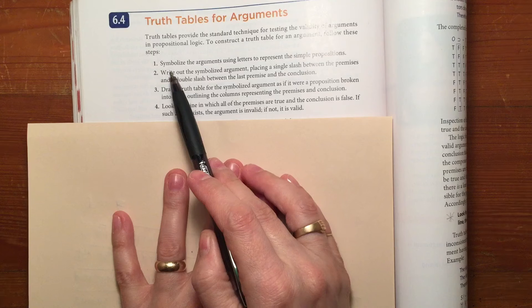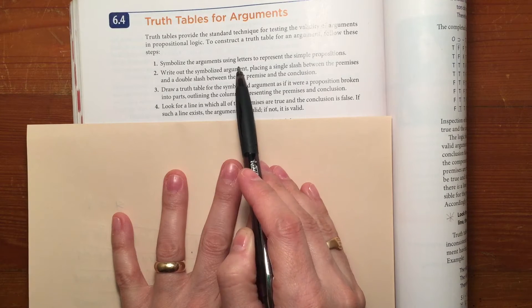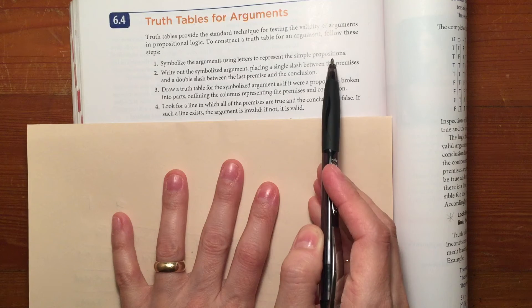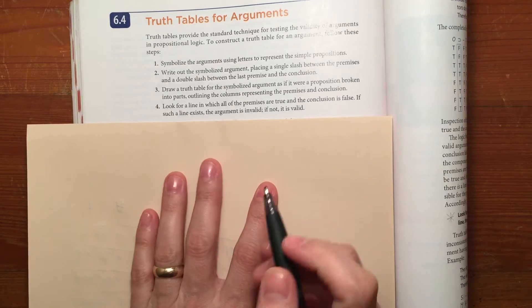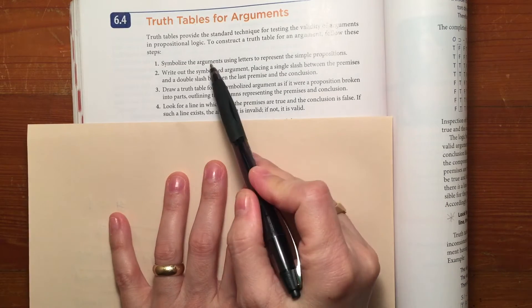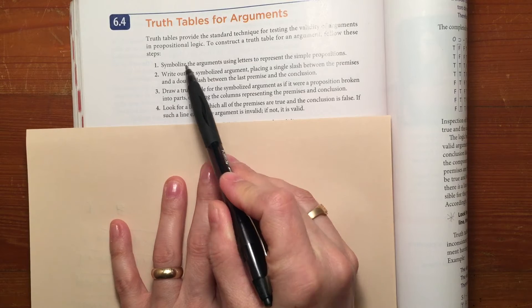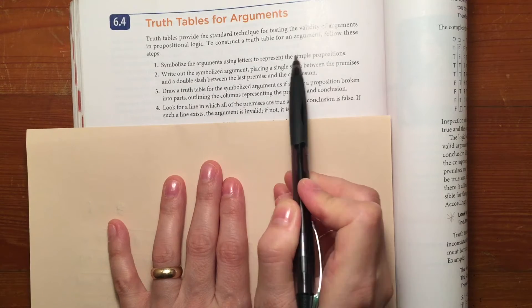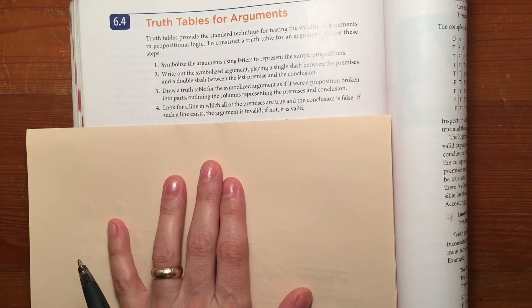First thing to notice is that we're going to symbolize the arguments using letters to represent entire propositions. You've been using terms as I mentioned several videos back, but now you're going to do the same thing you did with propositions, using letters to represent those propositions instead of terms.